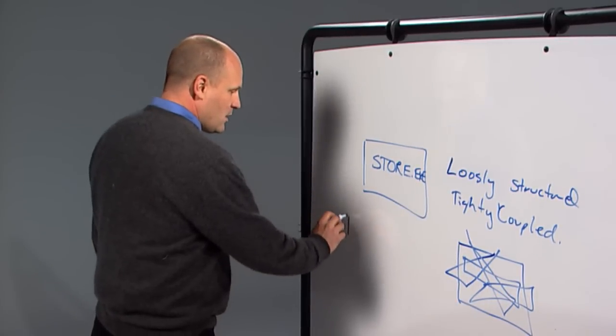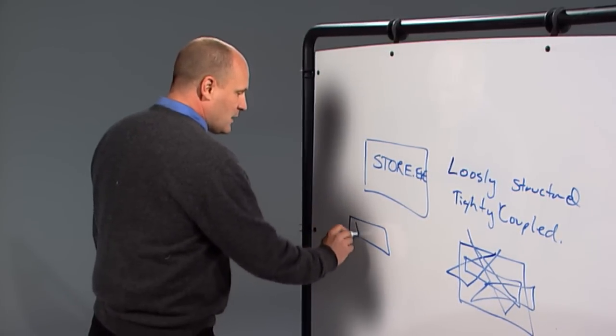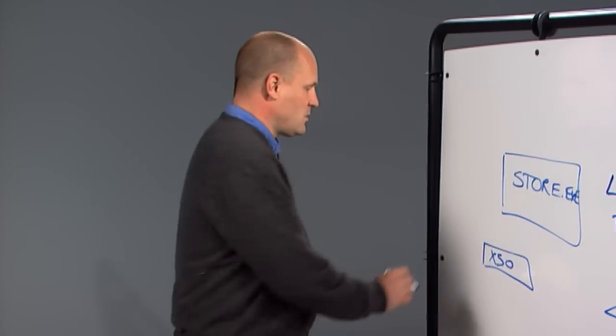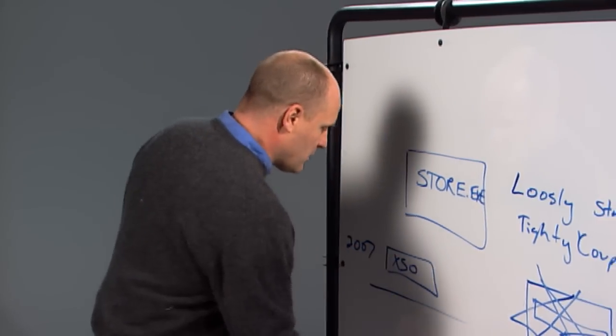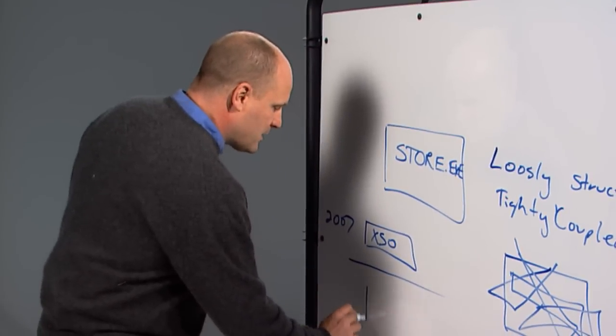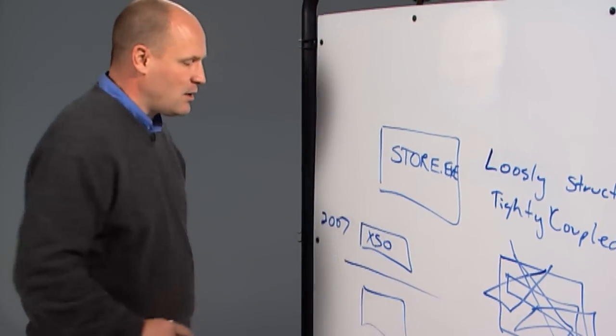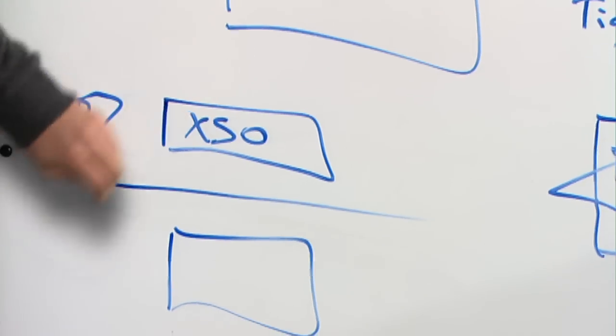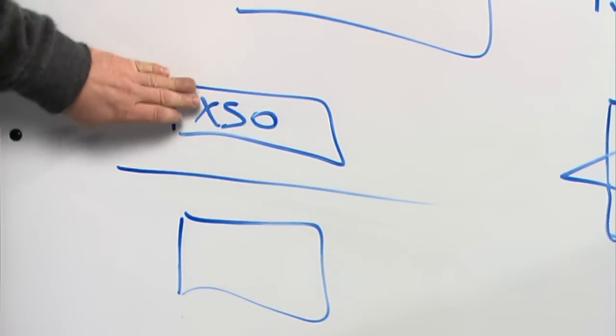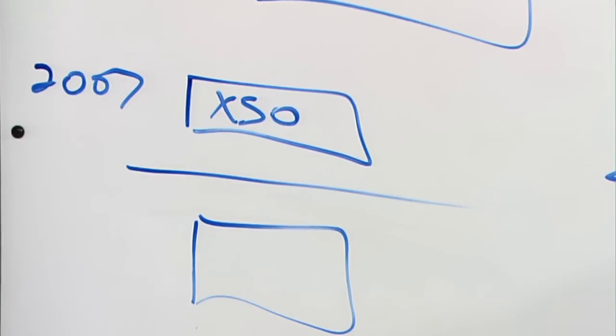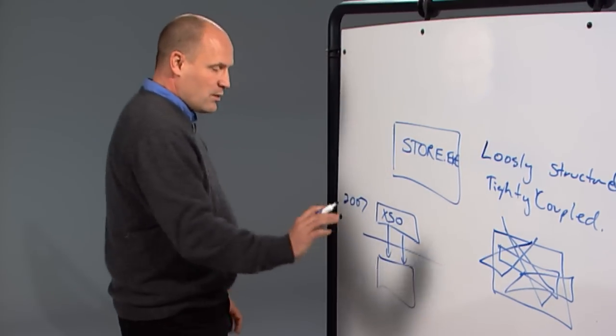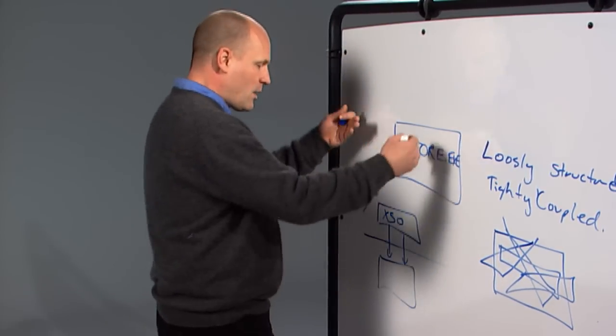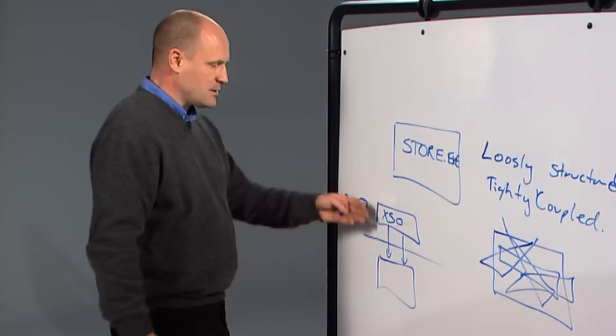So in the first release, what we did was we built a clean storage object layer. This was Exchange 2007. They could sit at a clean interface, and one of the tests of the clean interface was that it could sit on a different machine. So you could actually not only have a process boundary, but the interface here was efficient enough it could work across machine. And it would talk to the store through one protocol. So all of our protocols then would start coming through this XSO layer.